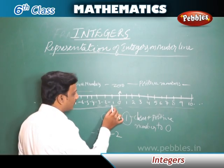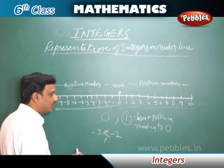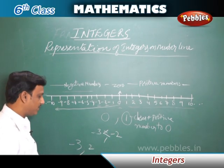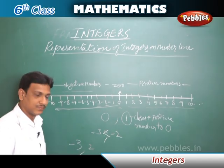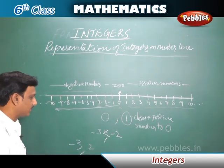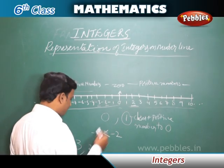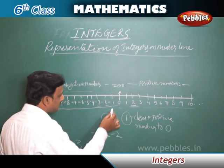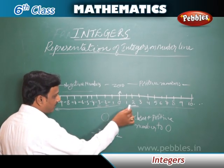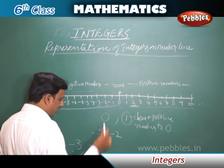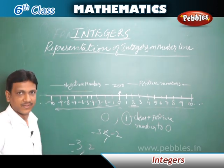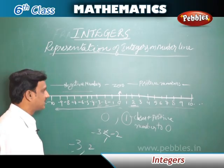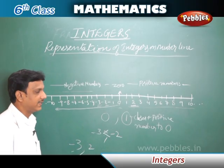If you compare minus one, minus one is bigger than minus two. Now comparing minus three and two — two is a bigger number because two is a positive number on the right side of zero, whereas minus three is on the left side. There are five places difference between minus three and two, so two is the bigger number. In this way, we can locate integers — both positive and negative numbers — on a number line.